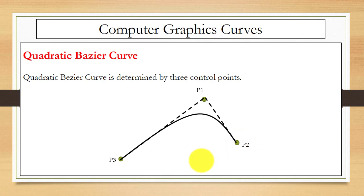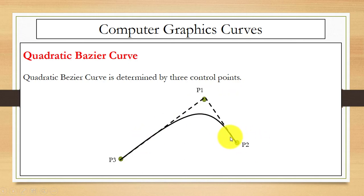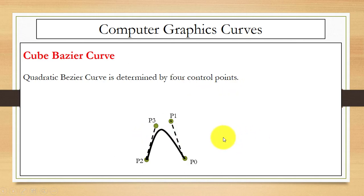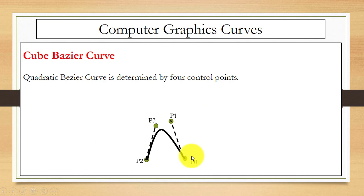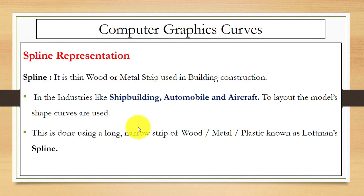The next type is the quadratic Bézier curve, which is controlled by three control points — you can see here we have three control points for this curve. The next type is the cubic Bézier curve, which is determined by four control points: P0, P1, P2, and P3.